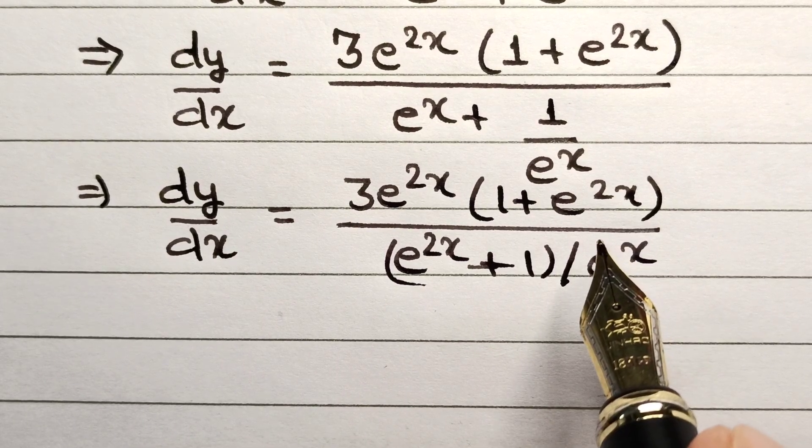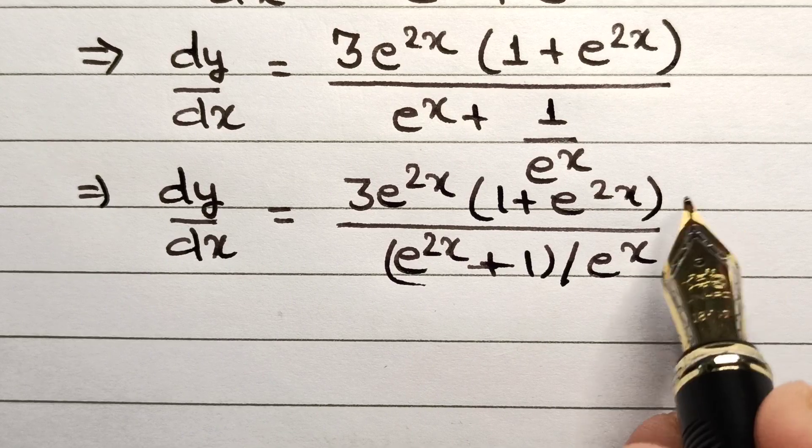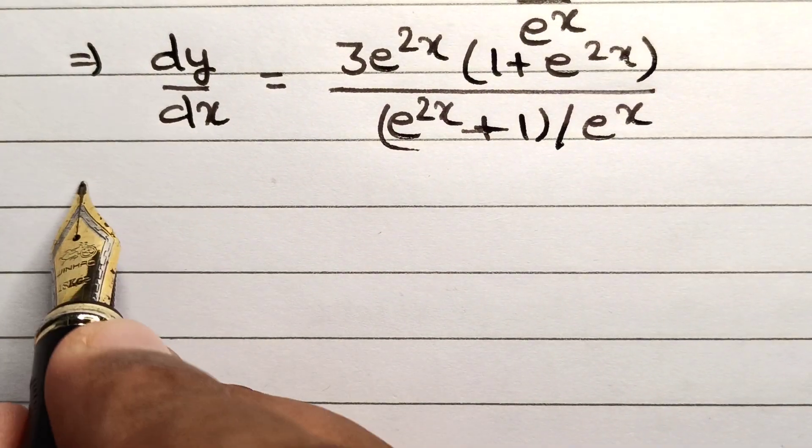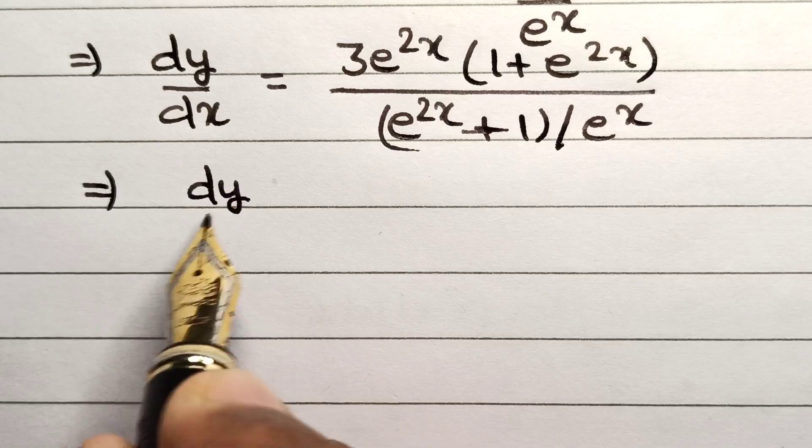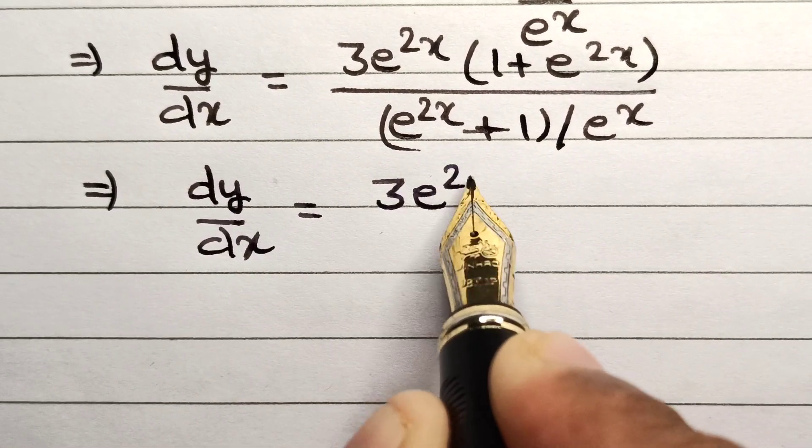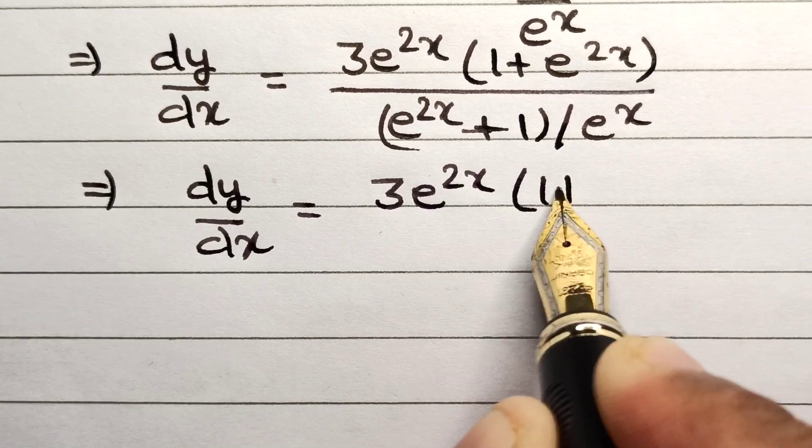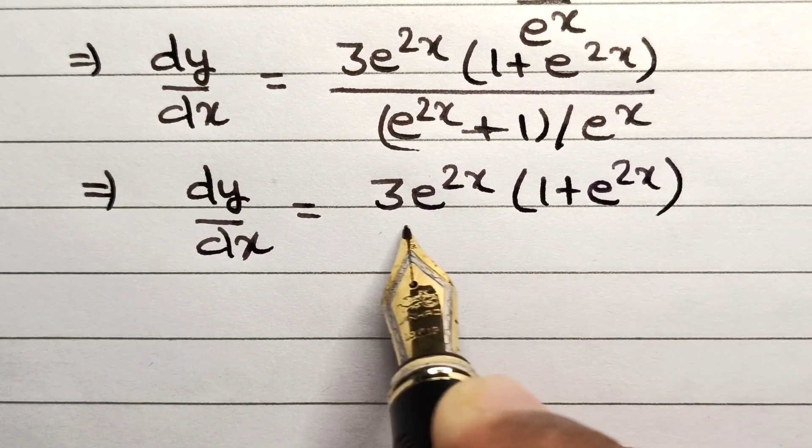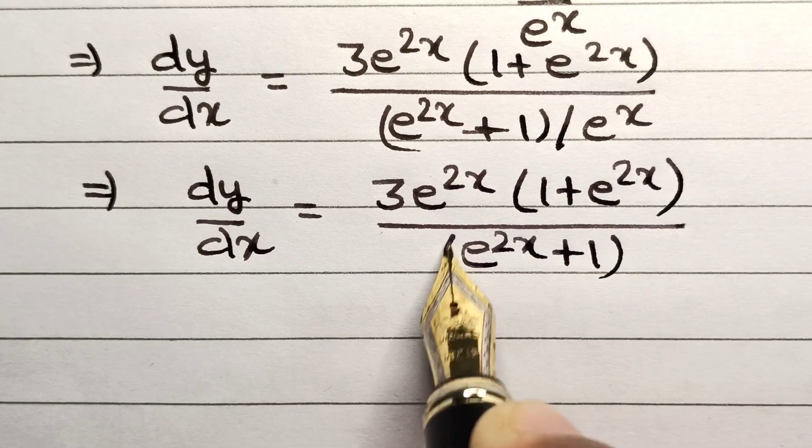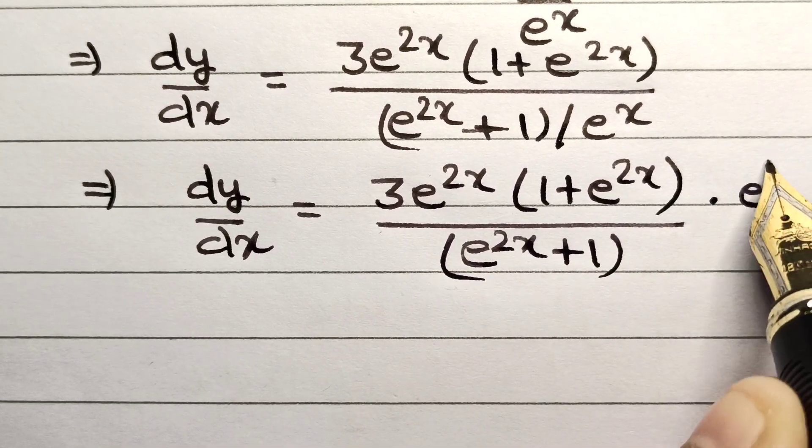In case of fractions, the denominator can be multiplied in the numerator. So this can now be written as dy/dx equals 3e^(2x) multiplied by 1 plus e^(2x), divided by e^(2x) plus 1, multiplied by e^x.